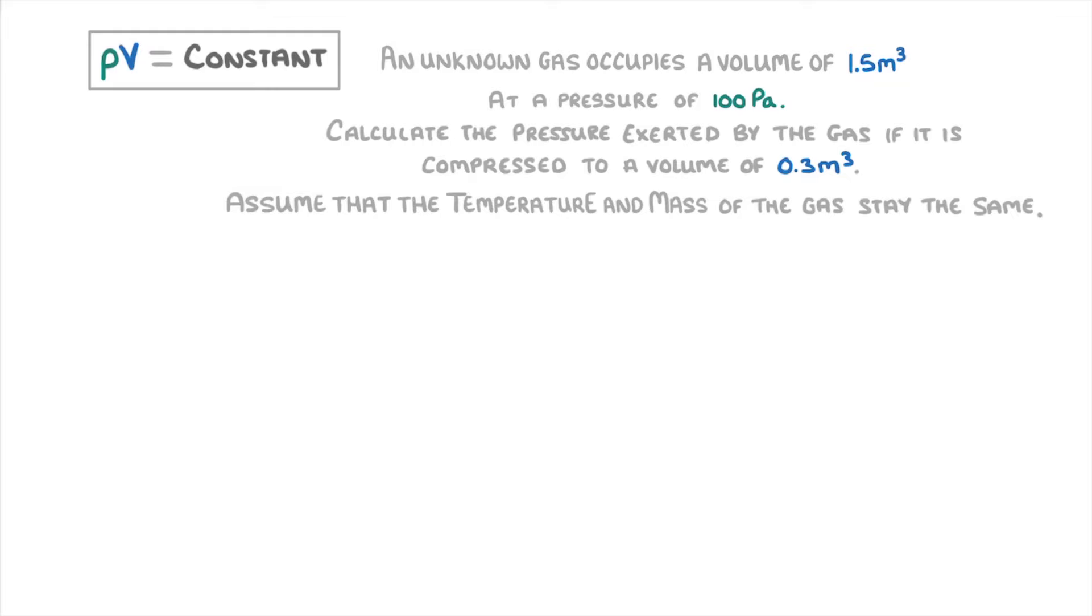So with questions like this, it's helpful to write out what we have. Effectively, we've got 1.5 meters cubed of a gas with a pressure of 100 Pa, and then 0.3 meters cubed of gas with an unknown pressure, which is what we're trying to find.